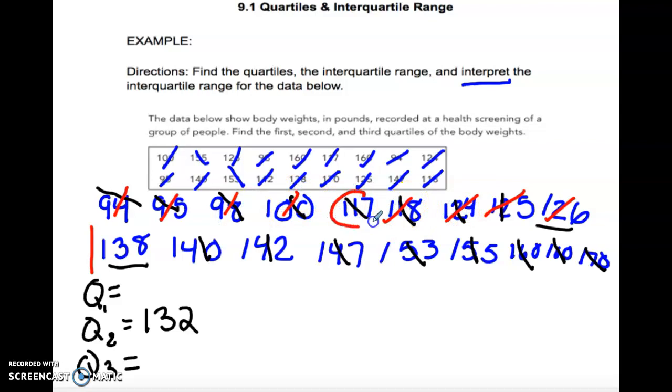Okay, and here is my middle number. So Q1 is 117, and then I have to find the median of the upper half. So again, same thing. Continue to cross off until you get a middle number and here we have 153. So Q3 is 153. So we found the quartiles.